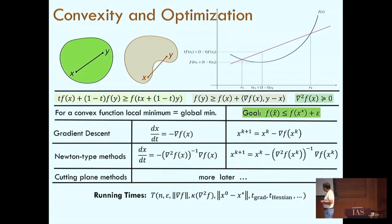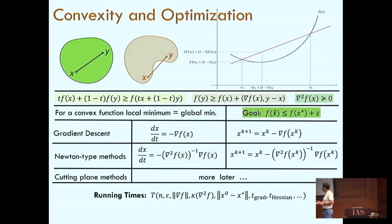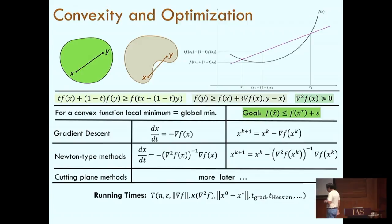What about running time? This is where the whole Pandora's box opens up. Convex optimization in general is not in P — this statement doesn't even make sense because we have to specify what the input is and how it is specified. Even then, the running time depends on a variety of parameters: the function, the error, the distance to the starting point, and the time to compute the gradient, the Hessian, and so on. There are thousands of methods with all kinds of dependencies, and this is a very rich literature.